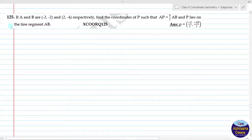Next we have problem 125. If A and B are (-2, -2) and (2, -4) respectively, find the coordinates of P such that AP is equal to 3/7 of AB and P lies on the line segment AB.